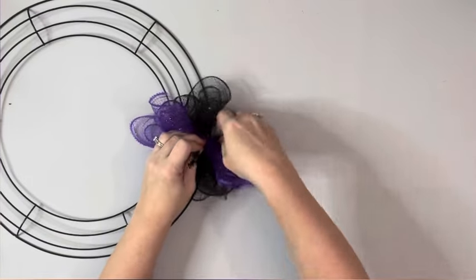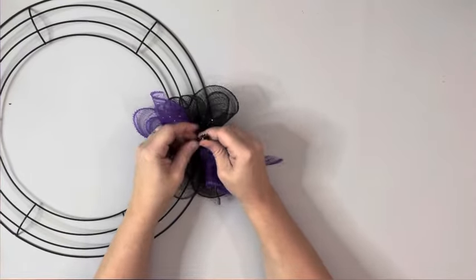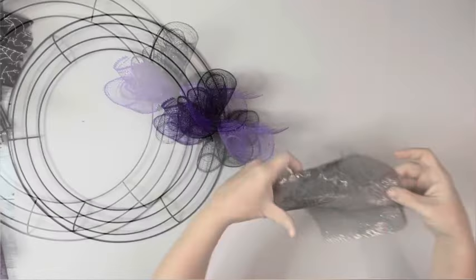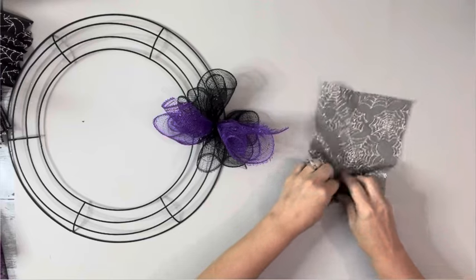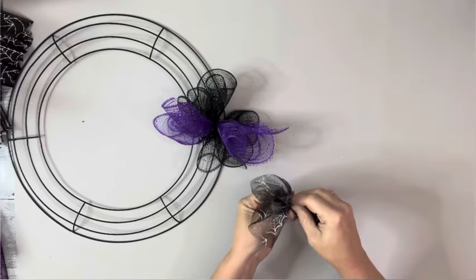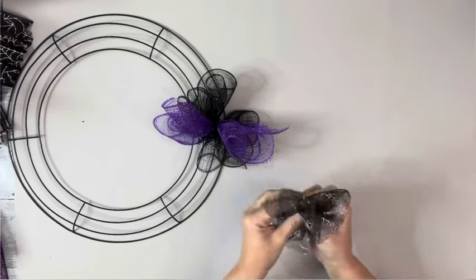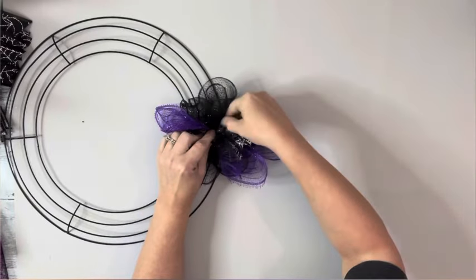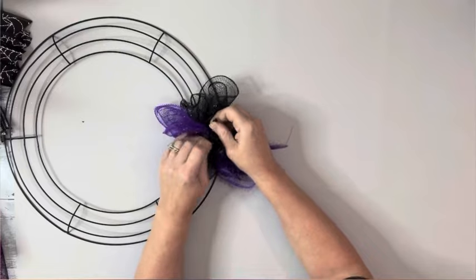Doing the same thing with the purple mesh on top of the black and then twisting the pipe cleaner. And then I take this decorative tulle, do the same thing with that, just scrunching it in the center. Keeping it pinched and then placing it on the pipe cleaner and twisting the pipe cleaner again.